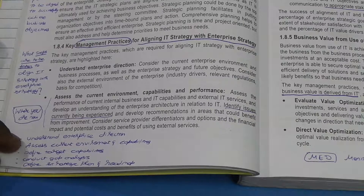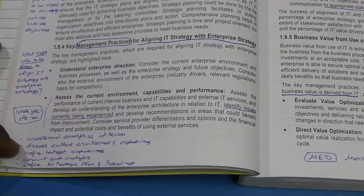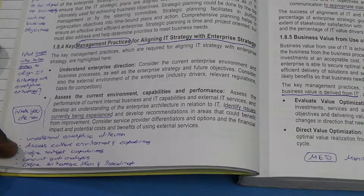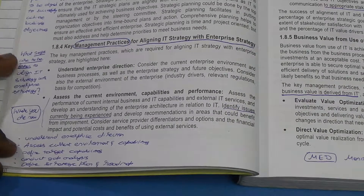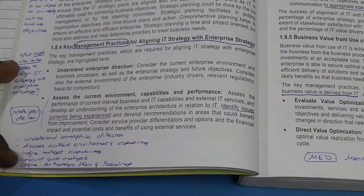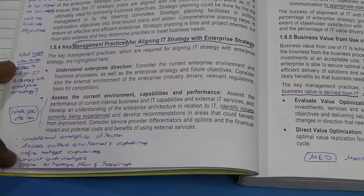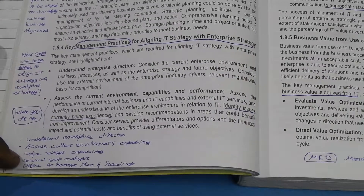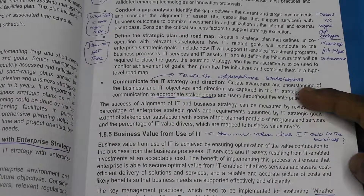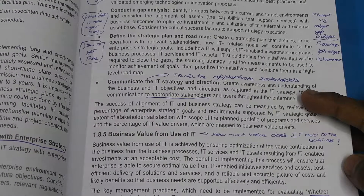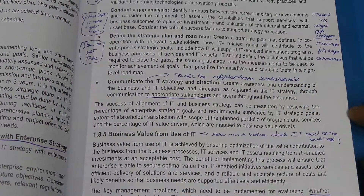Third, define the target capability — where we want to reach. Fourth, conduct a gap analysis — what is the gap between current performance and desired performance. Fifth, define the strategic plan and a roadmap, so that to bridge the gap we define a strategy on how we will achieve the target. And the last one is to communicate to all stakeholders that this is the plan and this is how we are going to achieve it.